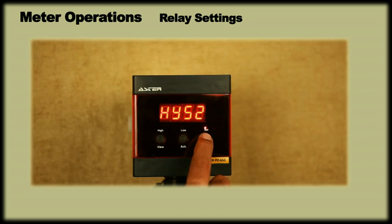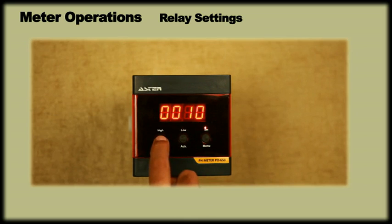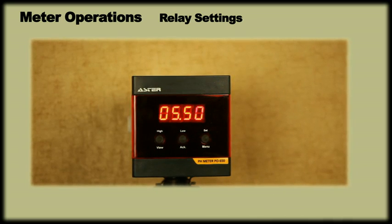Now the display will show hysteresis 2. On pressing menu, it will show a previously set hysteresis value. Using ACK key and view key, we can set the required hysteresis value. Let us set hysteresis value at 10% and press menu to enter. In this case, low set point is 5 with 10% hysteresis. Hence the relay will get reset only when the pH goes over 5.5.